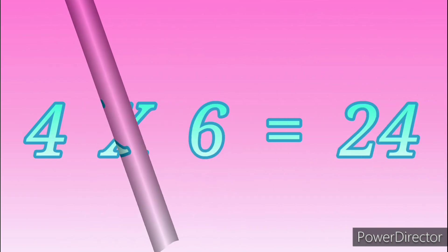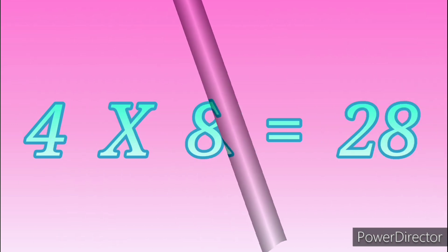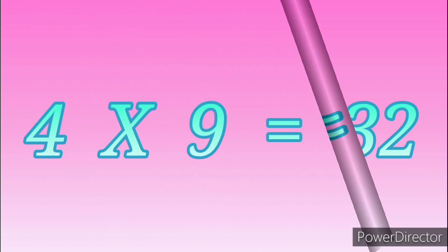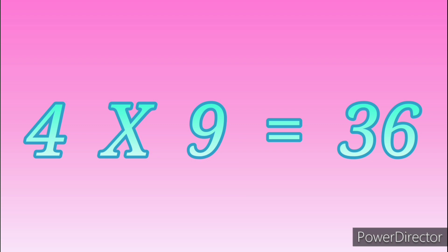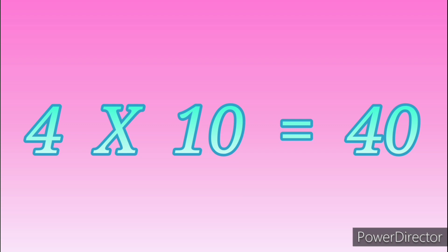Four-Seven's are twenty-eight. Four-Seven's are twenty-eight. Four-Eight's are thirty-two. Four-Eight's are thirty-two. Four-Nine's are thirty-six. Four-Nine's are thirty-six. Four-Ten's are forty. Four-Ten's are forty.